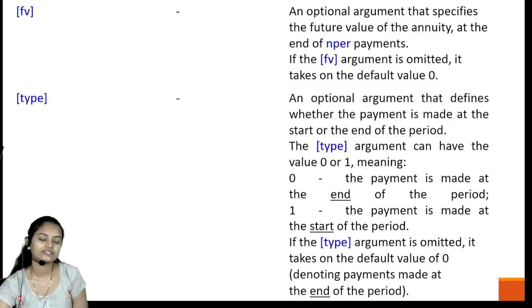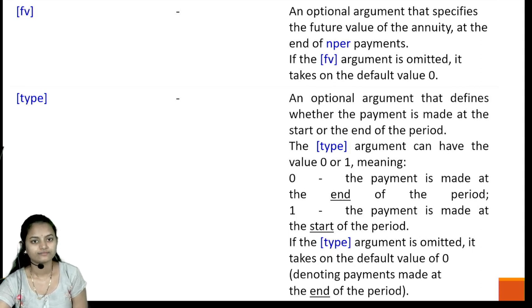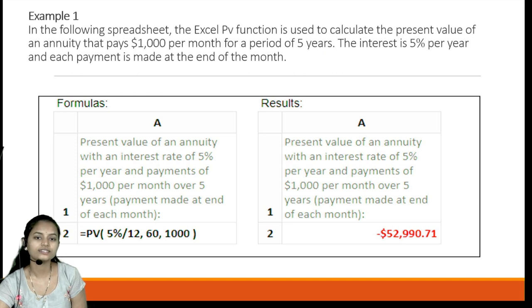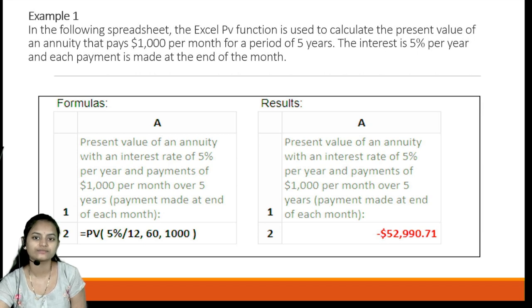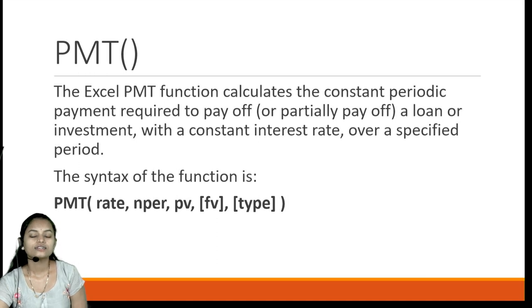The type parameter is again an optional argument that accepts values of either zero or one, same as in the FV function. For the PV example, the same example values are used — we put the values as per the syntax and the result is calculated.